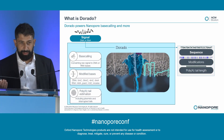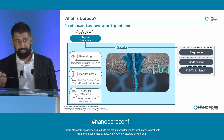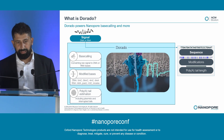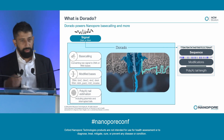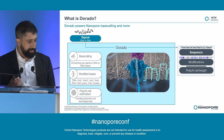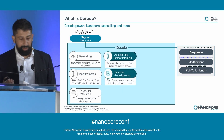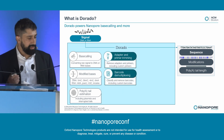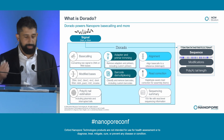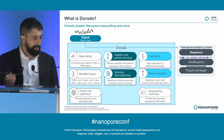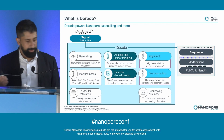Dorado does other things too. It can detect modified bases — eight modified bases in total in both DNA and RNA. It can do poly-A tail length estimation, adapter and primer trimming, barcode demultiplexing, alignment, read correction, and produce sequencing summary files. So Dorado is a lot more than just a base caller.